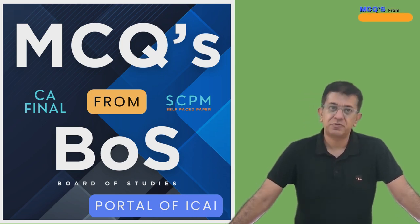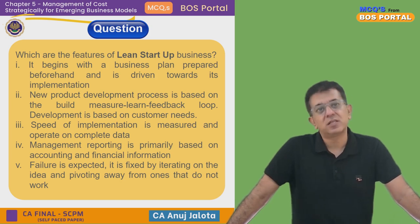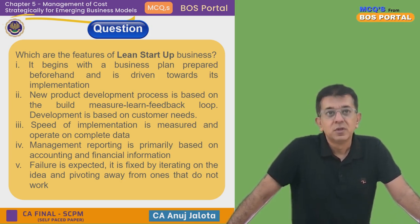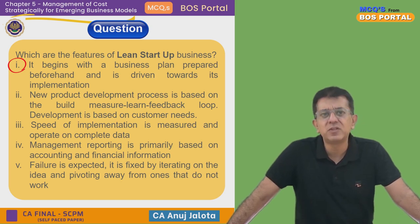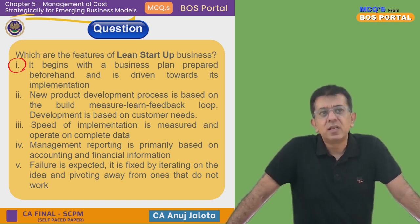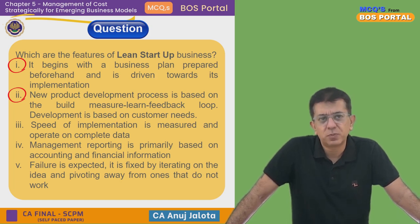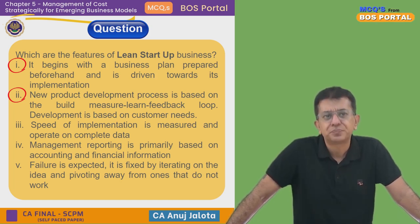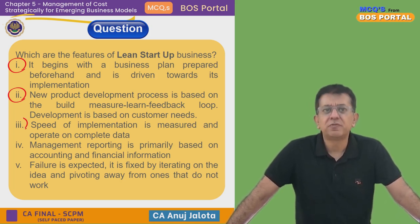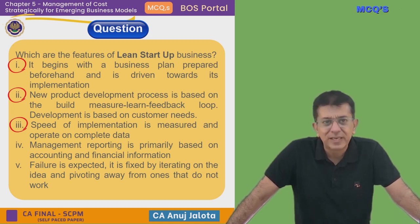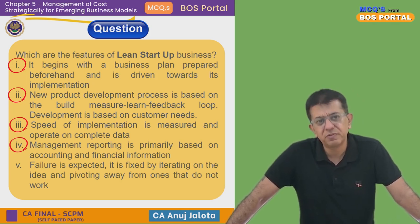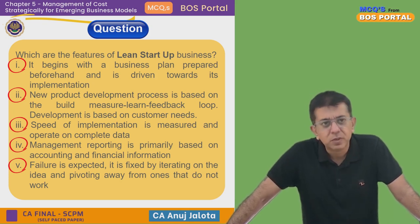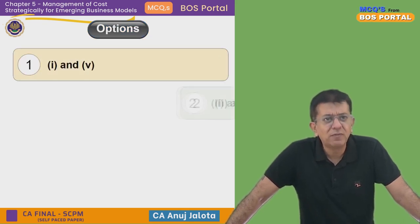Let's start. What are the features of a lean startup business? You might have heard this term a lot these days. First, it begins with a business plan prepared beforehand and is driven towards its implementation. Second, new product development is based upon the build-measure-learn feedback loop, based on customer needs. Third, speed of implementation is measured and it operates on complete data. Fourth, management reporting is primarily based on accounting and financial information. Fifth, failure is expected — it is fixed by iterating the idea and pivoting away from the ones that do not work.